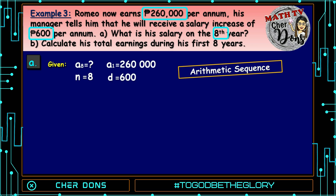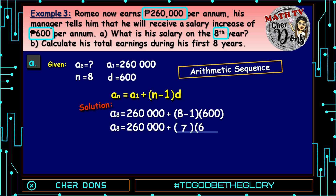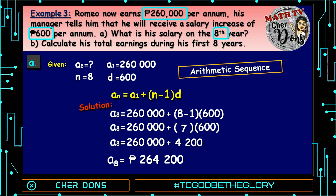Applying the formula: A sub n is equal to A sub 1 plus quantity n minus 1 multiplied by d. Directly plug in the given values: A sub 8 is equal to 260,000 plus quantity 8 minus 1 multiplied by 600. 8 minus 1 equals 7, so A sub 8 equals 260,000 plus 7 multiplied by 600, which equals 4,200. A sub 8 equals 260,000 plus 4,200, which equals 264,200 pesos. Therefore, on the eighth year, Romeo's salary will be 264,200 pesos.